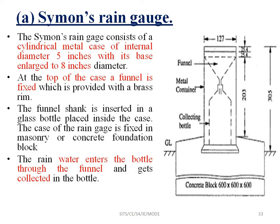The first type is Simon's rain gauge. It consists of a rectangular container with the top portion open, fixed in a concrete block. The rain gauge receives rainfall, and inside there is a bottle and a funnel. The container is open at the top and the water is collected through the funnel.